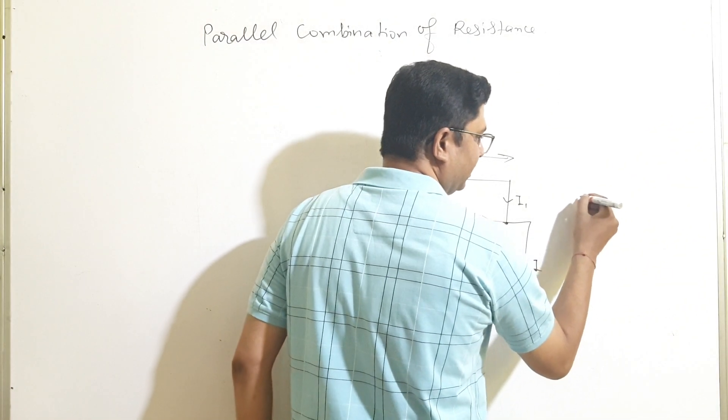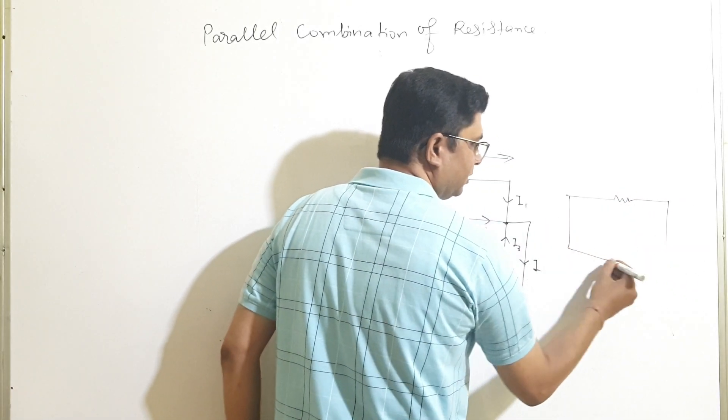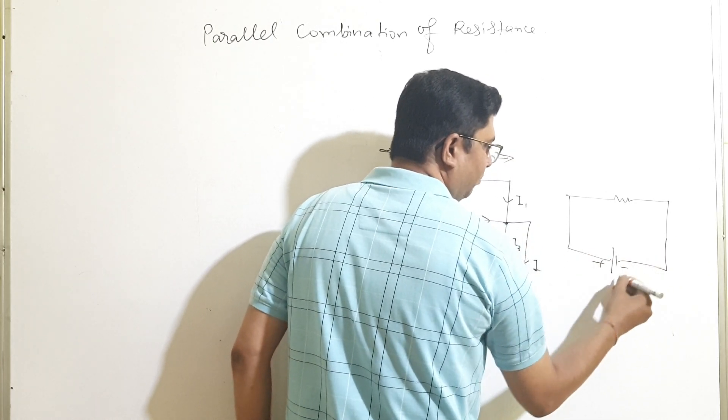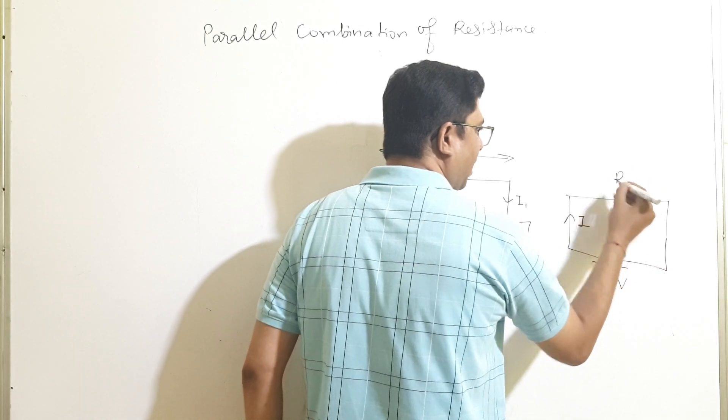Let this is the equivalent circuit of resistance. Let this be, V is the potential, I is the current, and Rp is the parallel combination.